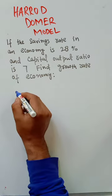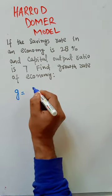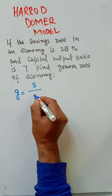According to the Harrod-Domar model, we know growth rate of the economy is equal to saving-income ratio divided by capital output ratio.